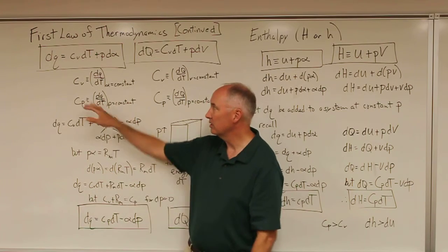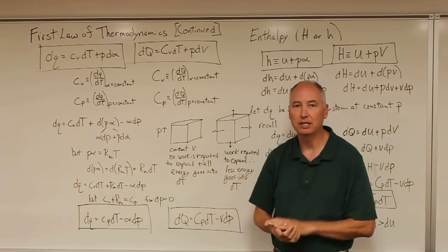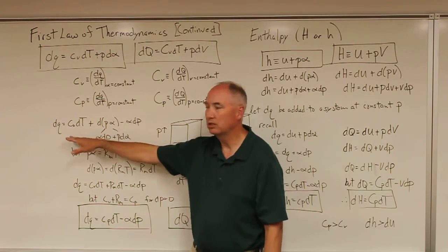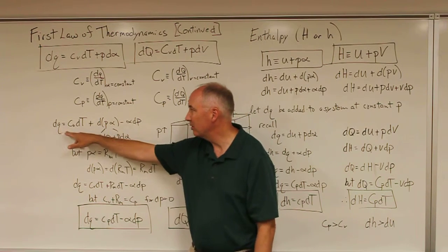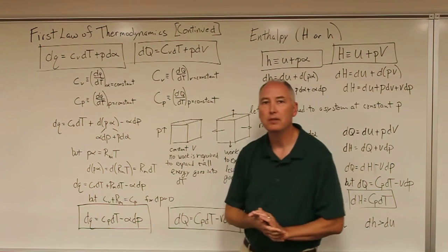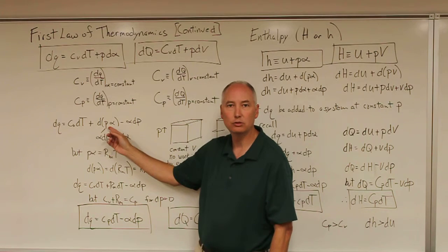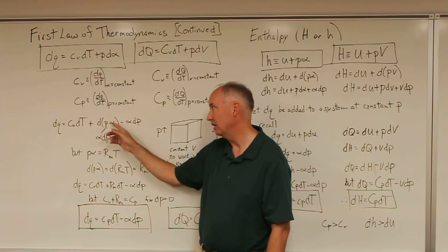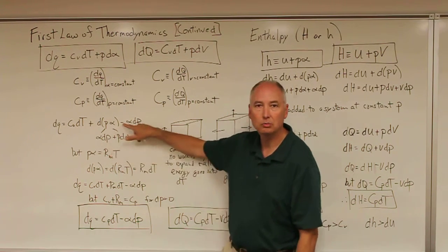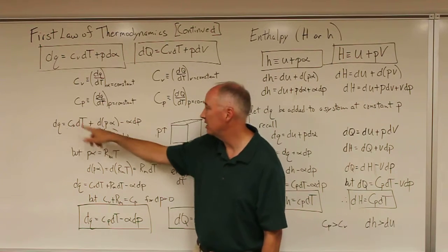What we're going to do is transform this equation from a constant volume assumption to a constant pressure assumption to get a different and more useful form of the first law of thermodynamics. To do that, we start with a review of calculus. dq equals c_v dt plus the differential of p_alpha minus alpha dp. This transformation is valid because if you apply the chain rule, the differential of a two-variable system gives you the second times the derivative of the first plus the first times the derivative of the second. The alpha dp terms cancel, leaving the original equation: c_v dt plus p d_alpha.